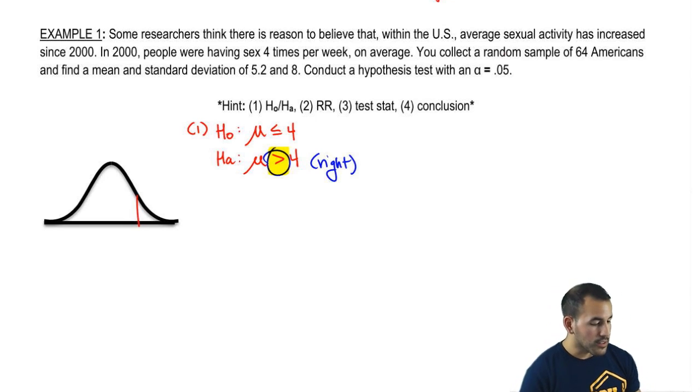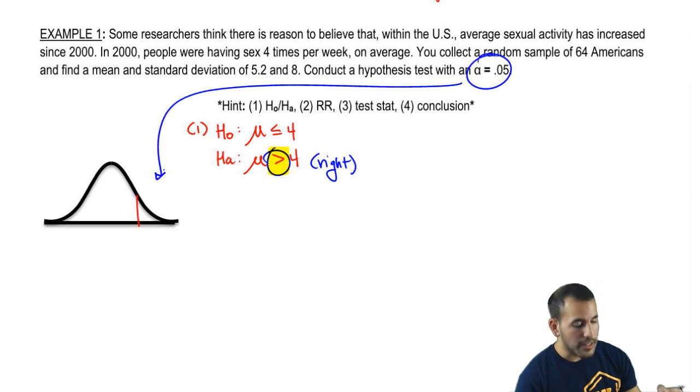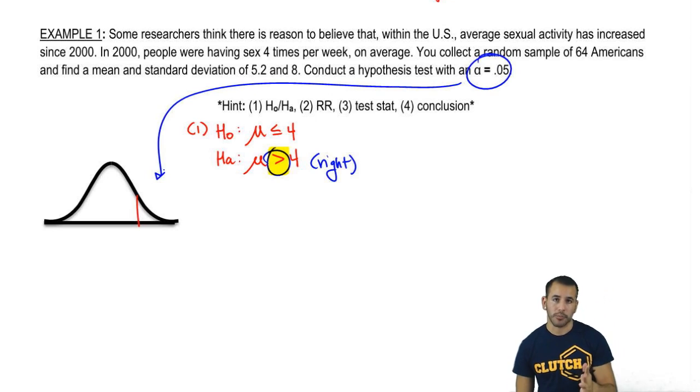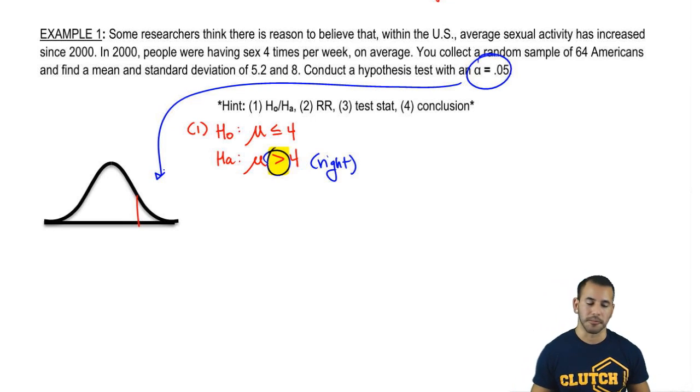So here we go. What's the area of that little tail right there? It's going to be our alpha. Full blast because it's not a two tail problem. So we don't have to split that alpha into two. So it's full blast, 0.05.